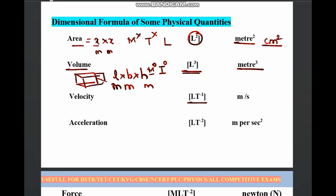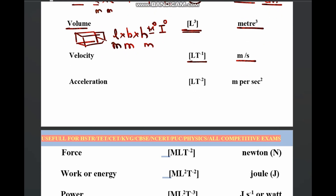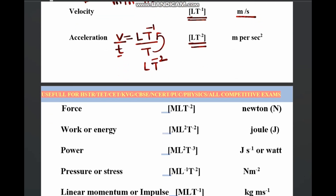Similarly, velocity is L T⁻¹ (meter per second). Acceleration is change in velocity with respect to time. The dimensional formula of velocity is L T⁻¹ divided by T, which gives L T⁻². When T in the denominator is brought to the numerator the power becomes minus 2. So acceleration is L T⁻². Like this you have to construct dimensional formulas for force, work, energy, power, pressure, linear momentum, density, and so on.